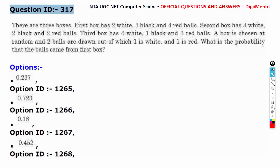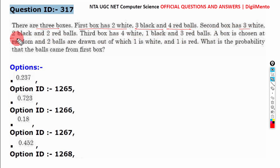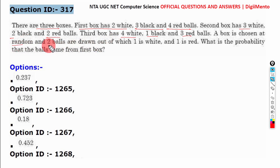The next question: there are 3 boxes. The first box has 2 white, 3 black, and 4 red balls. The second box has 3 white, 2 black, and 2 red balls. The third box has 4 white, 1 black, and 3 red balls. A box is chosen at random and 2 balls are drawn, of which one is white and one is red. What is the probability that the balls came from the first box?